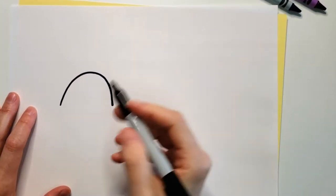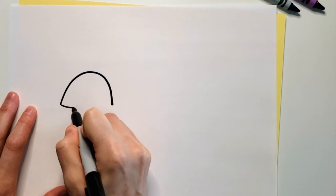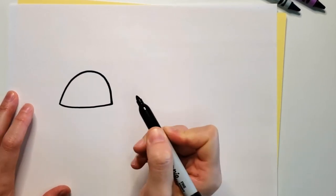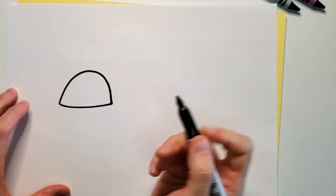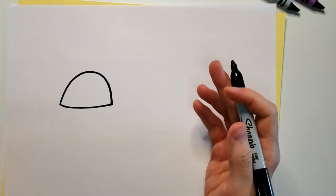Now equally simple, we're going to draw a long line connecting those two points, and that is pretty much the shape of Bon Bon.